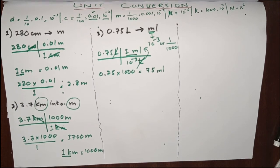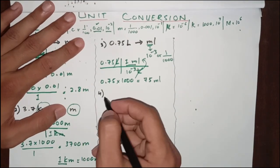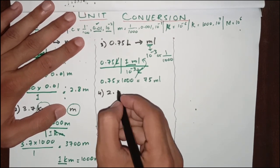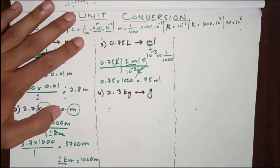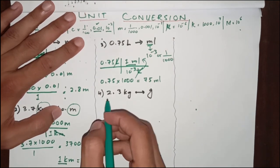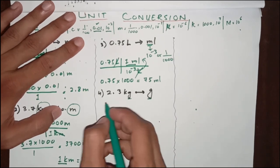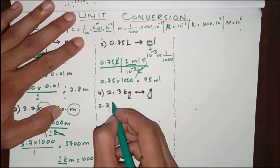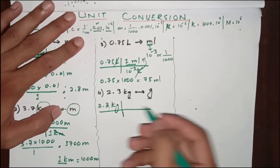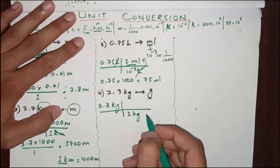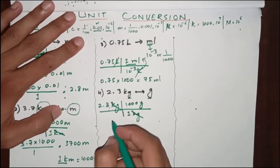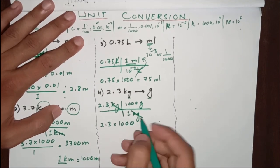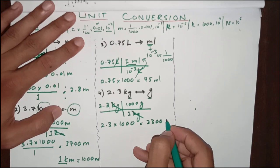Example 4: convert 2.3 kg into grams. It is the same approach as the meters example. The base unit is gram; we convert the kilo. As we know, 1 kg equals 1000 grams. So kg cancels with kg, and 2.3 multiplied by 1000 gives the answer: 2300 grams.